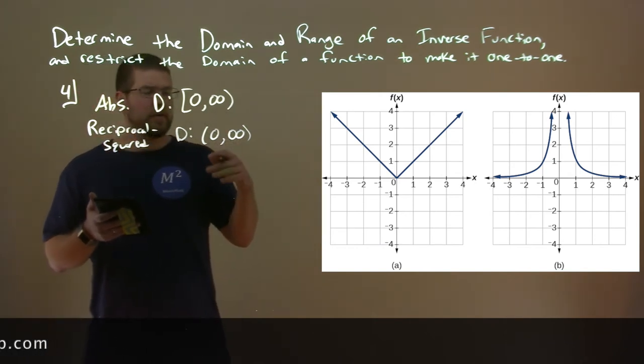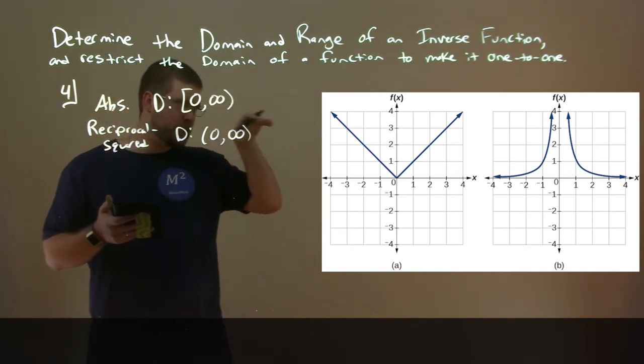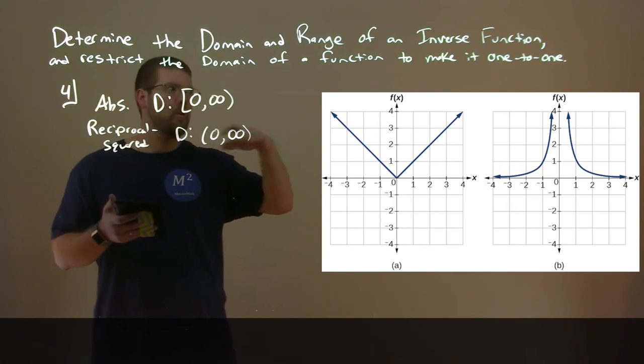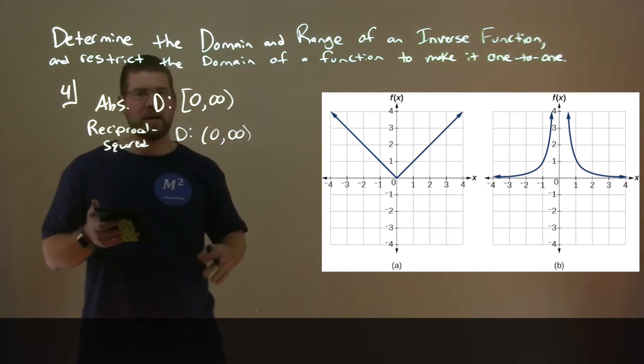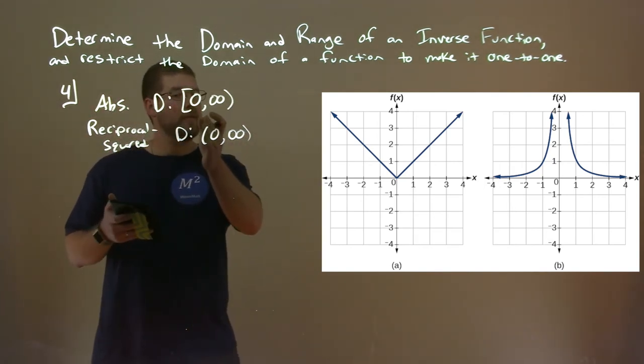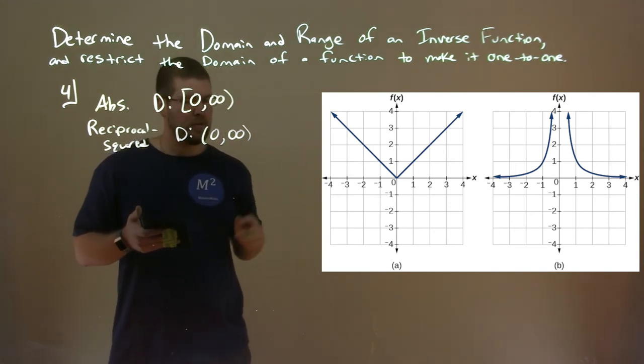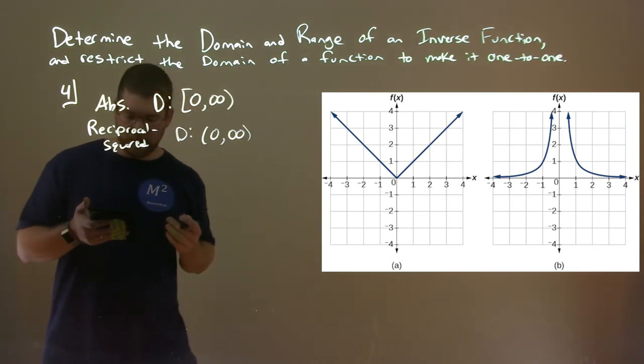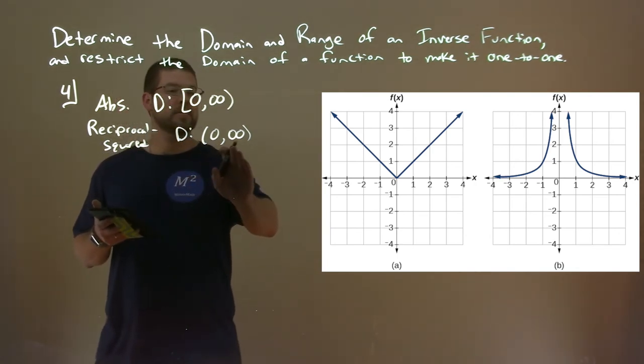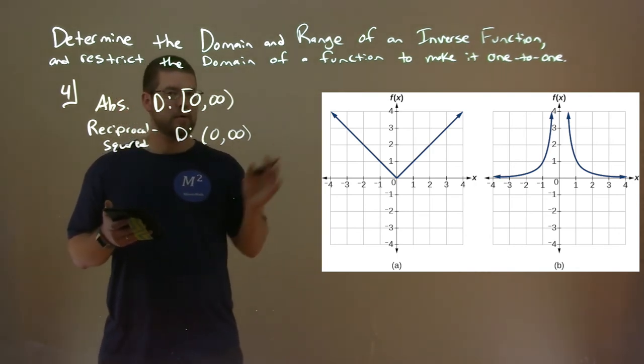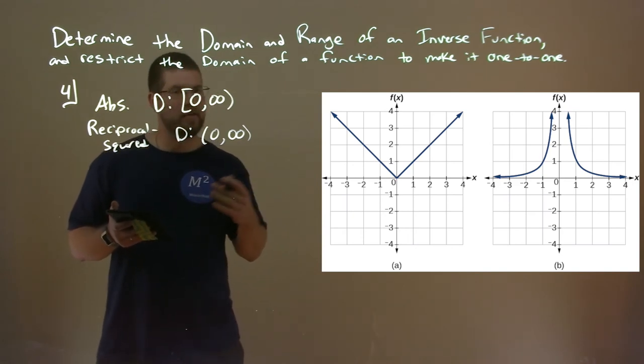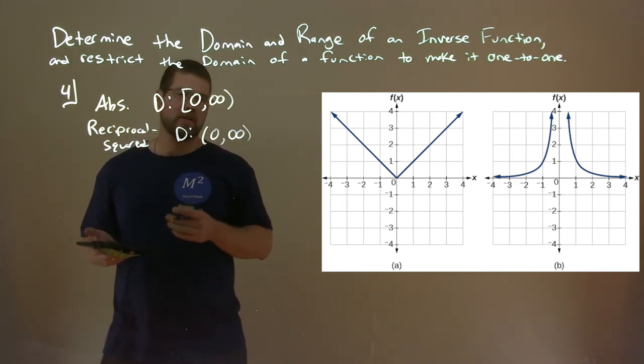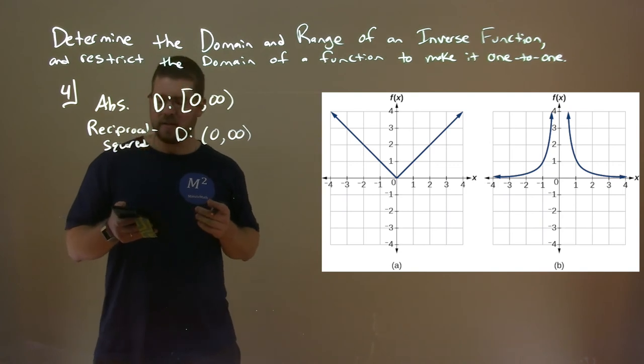We can see the constant function is just a straight line across, so it's always intersecting at that point. The absolute value function here, if we restrict the domain from zero to infinity, it would pass a horizontal line test, making it one-to-one. The reciprocal squared, again, we restrict the domain from zero to infinity, basically just the right-hand side here, and that would pass a horizontal line test, making it one-to-one, allowing us to have an inverse function there.